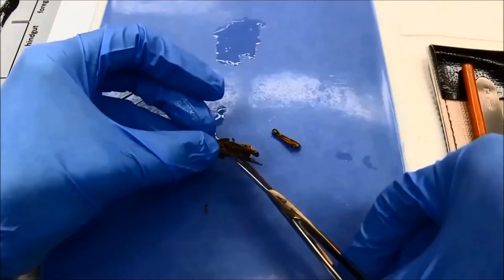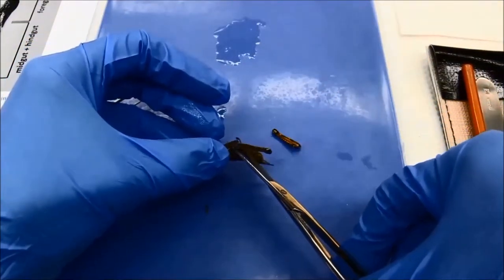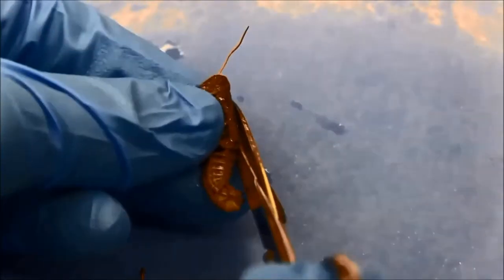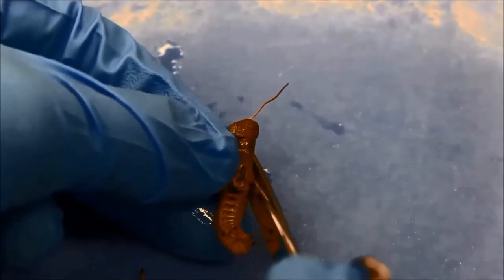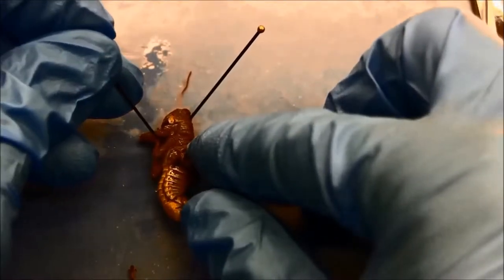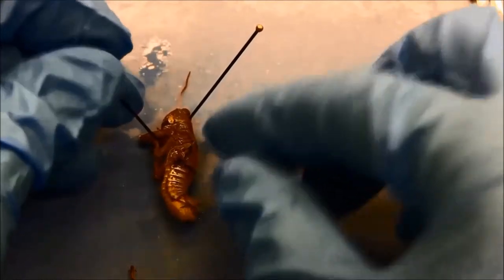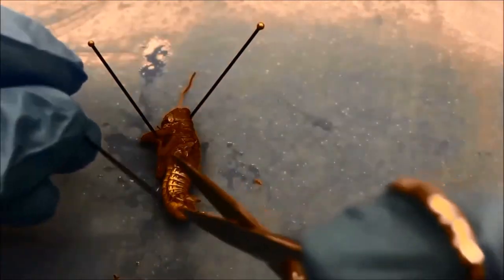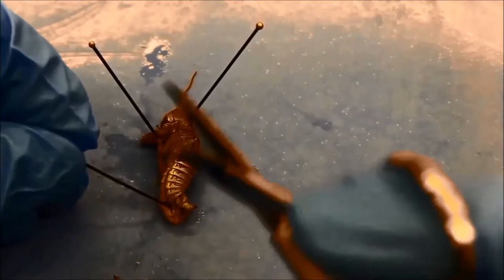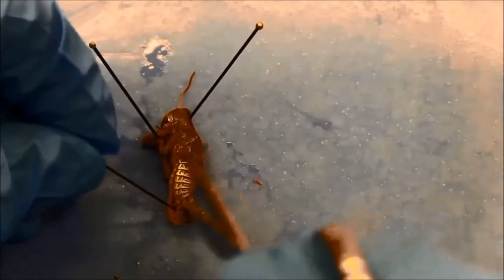Then, using scissors, I carefully remove the hind legs and the wings. After this, I put the grasshopper on its side and use insect pins to anchor it to the dissecting pad.